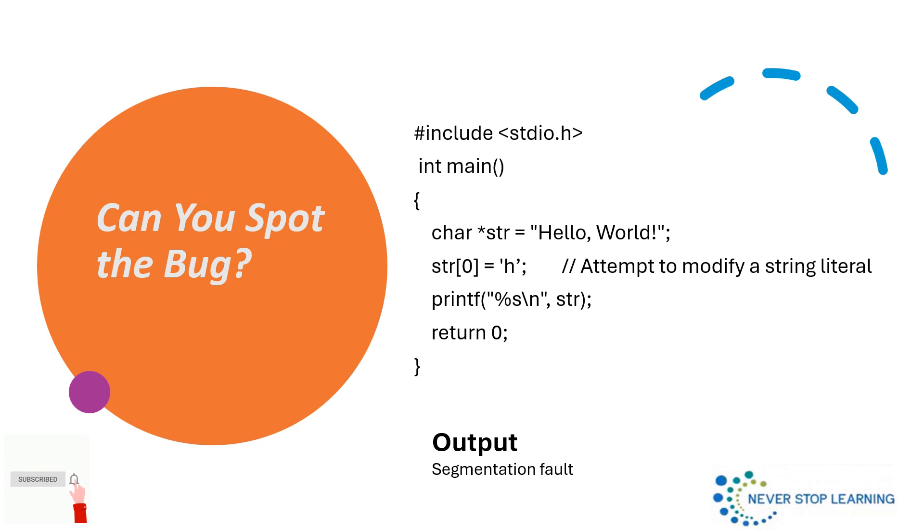So here is a simple C program. It's supposed to print hello world but instead it crashes. Can you spot why? Your time starts now.